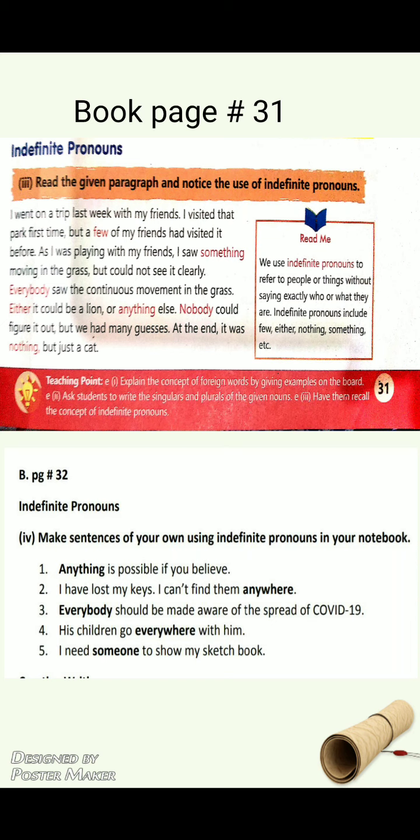Number four: 'His children go everywhere with him.' Again 'everywhere' means har jagah — no specific place is mentioned. Number five: 'I need someone to show my sketchbook.' 'Someone' means koi bhi — again not specified. Exact information is not given.